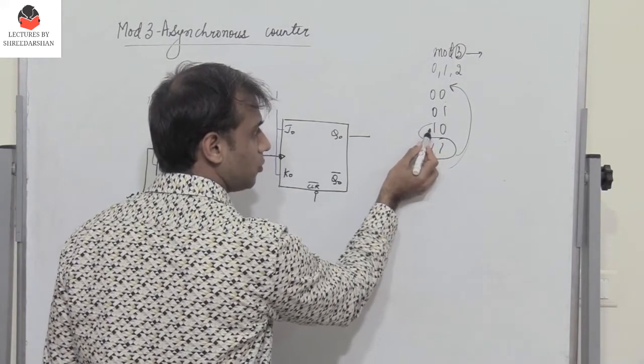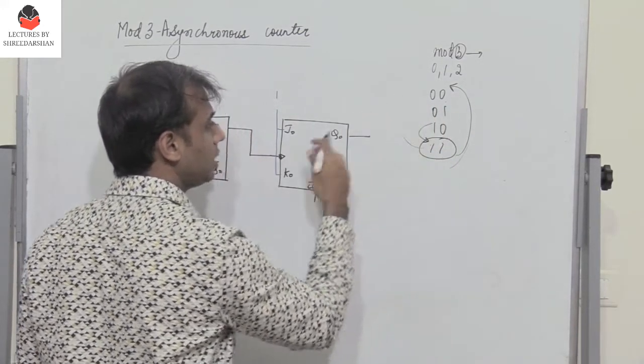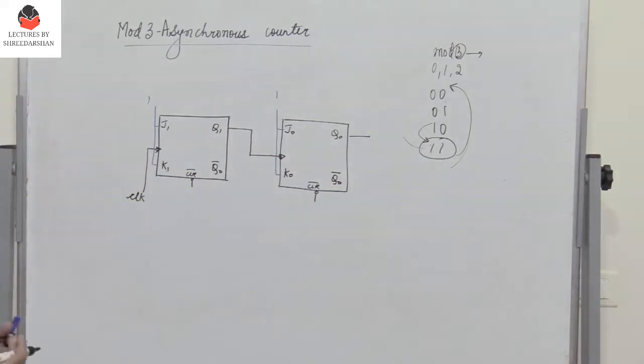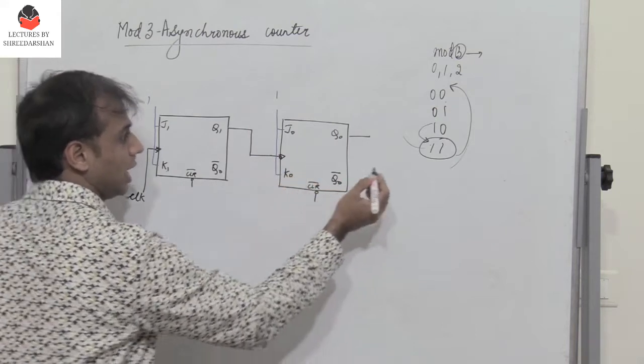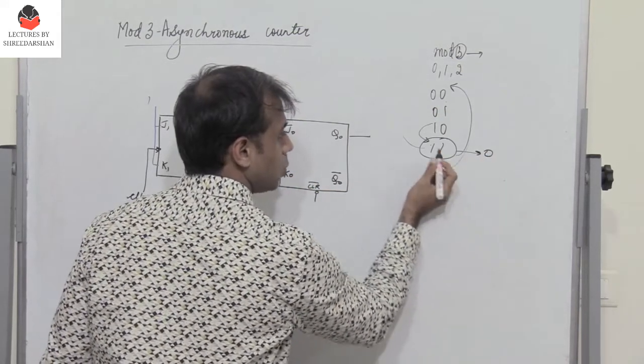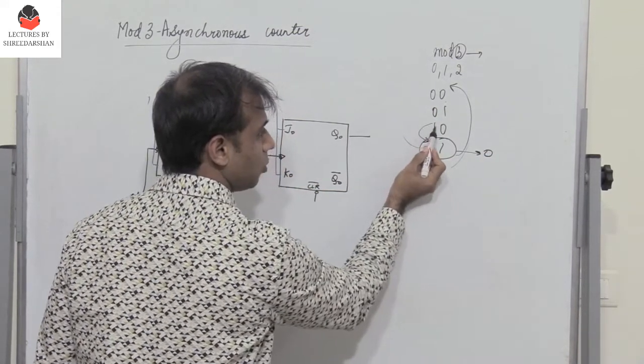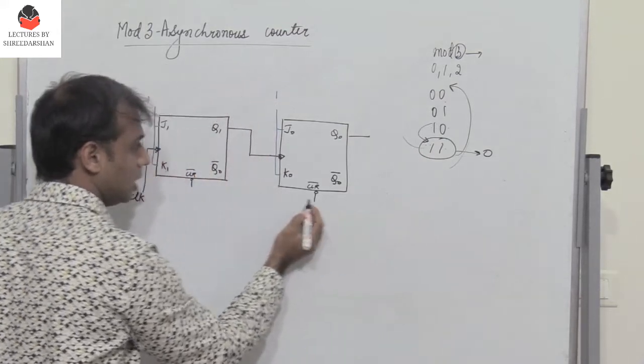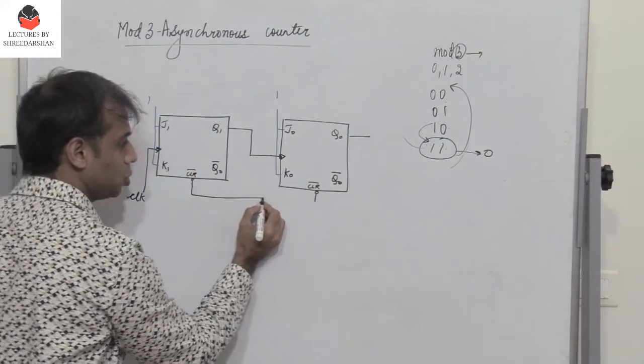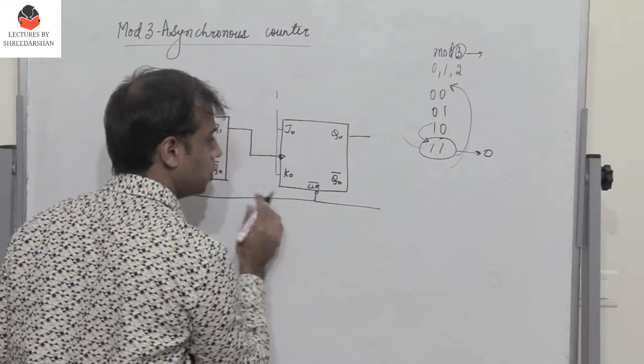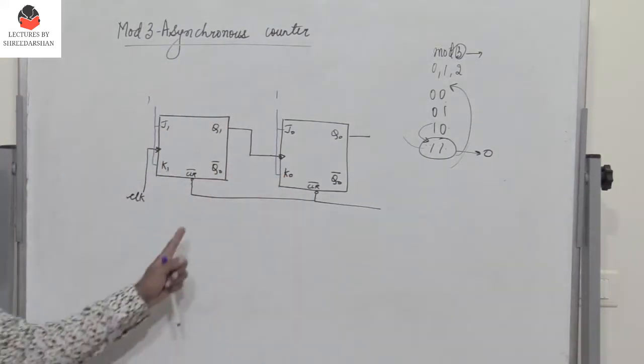When they change state from 10 to 11, immediately both flip-flops should be cleared. What should we do? I should get a 0 when there's a change of state from 10 to 11, such that it's given as input to both clear inputs of the flip-flops. It should become 0.